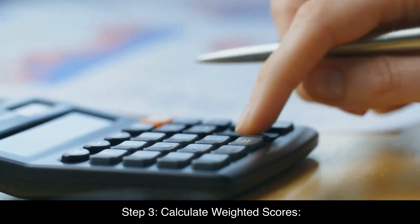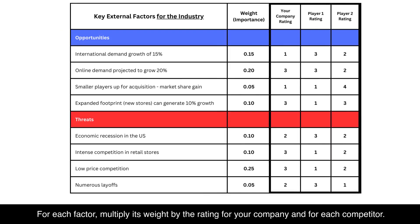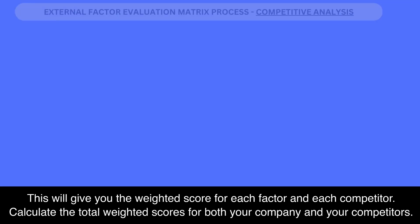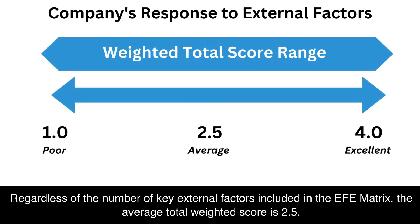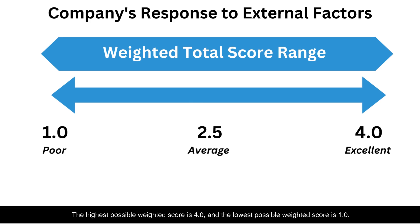Step 3: Calculate weighted scores. For each factor, multiply its weight by the rating for your company and for each competitor. This will give you the weighted score for each factor and each competitor. Then calculate the total weighted scores for both your company and your competitors. Regardless of the number of key external factors included in the EFE matrix, the average total weighted score is 2.5. The highest possible weighted score is 4.0, and the lowest possible weighted score is 1.0.